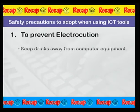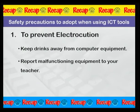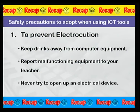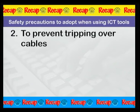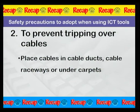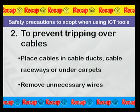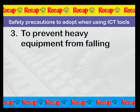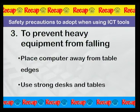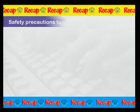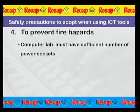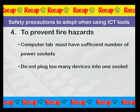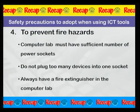This was the first part of the lesson. Let us have a small recap of what we just learned about safety precautions when using ICT tools. First, to prevent electrocution: keep drinks away from computer equipment, report malfunctioning equipment to your teacher, and never try to open up an electrical device. Secondly, to prevent tripping over cables: place cables in cable ducts, cable raceways, or under carpets, and remove unnecessary wires. Number three, to prevent heavy equipment from falling: place computers away from table edges and use strong tables and desks. And finally, number four, to prevent fire hazards: the computer lab must have a sufficient number of power sockets, do not plug too many devices into one socket, and always have a fire extinguisher in the computer lab.